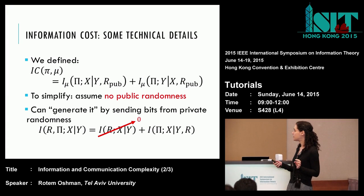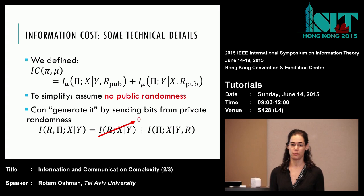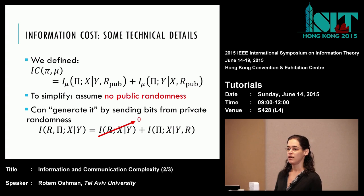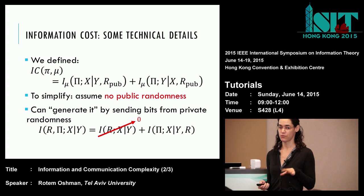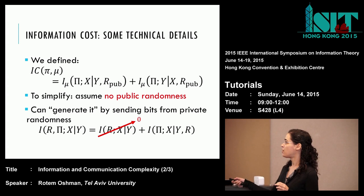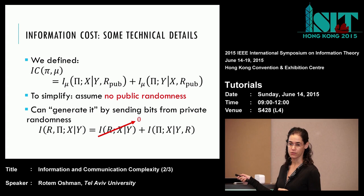I want to be a little bit more technical about the definition of information complexity, something that Mark mentioned at the end of his part. This is the way we defined the information cost of a protocol. We're given a protocol pi. Big pi is a random variable representing the transcript of this protocol. The randomness comes both from the input distribution mu and from the internal randomness of the protocol itself. We measure how much Bob learns — he knows y and he's learning about x — and how much Alice is learning about y given x from observing the transcript.